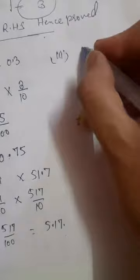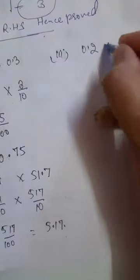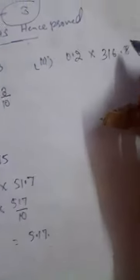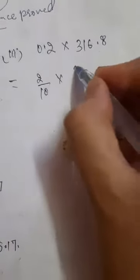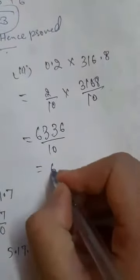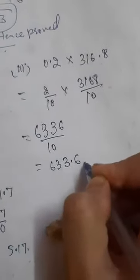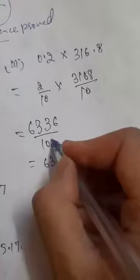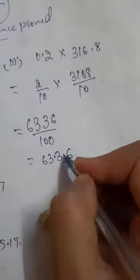Third part is 0.2 multiplied by 316.8. 0.2 divided by 10 into 316.8 divided by 10. 2 into 316.8: 2 times 8 is 16, carry 1; 2 times 6 is 12 plus 1 is 13, carry 1; 2 times 1 is 2 plus 1 is 3; 2 times 3 is 6, divided by 100. 10 times 100, so 63.36.